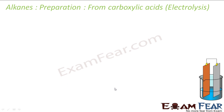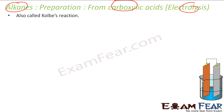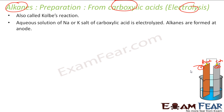Now again, let's see another way of preparation of alkane — again from carboxylic acids. In this case we are not using soda lime, but we are using the electrolysis process. This is also called the Kolbe reaction. Here we have an anode and a cathode. We take an aqueous solution of sodium or potassium salt of carboxylic acid, electrolyze it, and alkanes are formed at the anode.